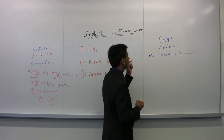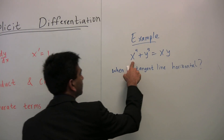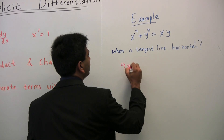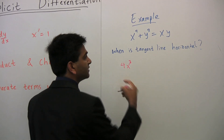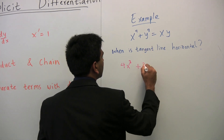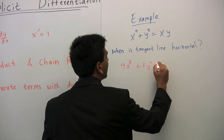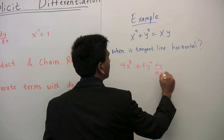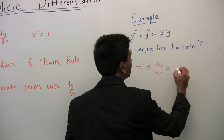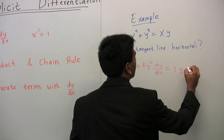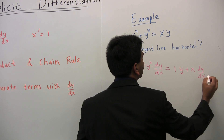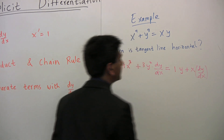The derivative of this function — taking the derivative of each term — gives us 4x cubed times the derivative of x, which is 1, plus 3y squared times dy/dx, equals — using the product rule — 1 times y plus x times dy/dx. That's just the product rule and chain rule combined.